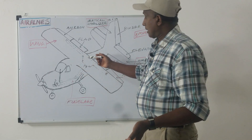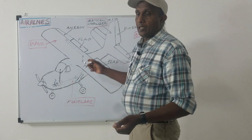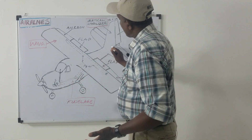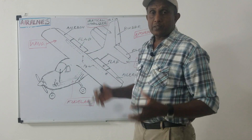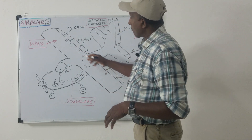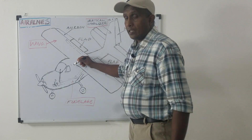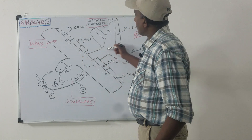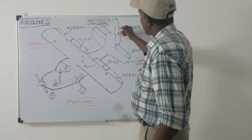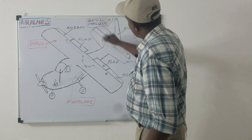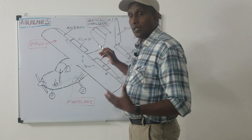The fuselage provides an attachment point for the other major components. The wings and empennage attach to the fuselage — the horizontal stabilizer, vertical stabilizer, and the entire tail section are all attached to the fuselage.